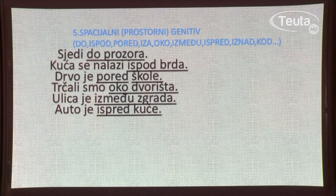Spacijalni ili prostorni genitiv — vidite u zagradi prijedloge koje koristimo kada želimo upotrijebiti prostorni genitiv, odnosno genitiv sa značenjem mjesta. Sjedi do prozora — do čega? Do prozora. Kuća se nalazi ispod brda. Drvo je pored škole. Trčali smo oko dvorišta. Ulica je između zgrada. Auto je ispred kuće. Znači odredba za mjesto — prostorni ili spacijalni genitiv.